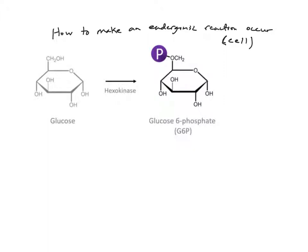Even though endergonic reactions are non-spontaneous — in other words not favorable — the cell still needs to make them happen in many cases so that the cell can live. These are reactions such as linking different amino acids together to make a protein, reactions that are part of metabolism, especially creating things the cell needs. The cell has to make those endergonic reactions occur quite frequently, and there are three ways to do this.